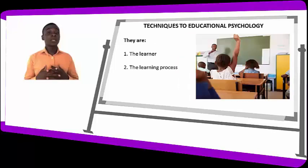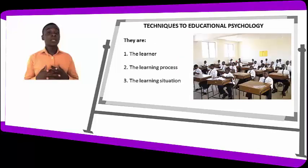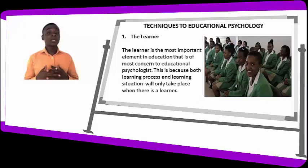The three elements are: the learner, the learning process, and the learning situation. Number one is the learner — the learner is the most important element in education and is of the most concern to the educational psychologist. The major concern of the educational psychologist is the learner.